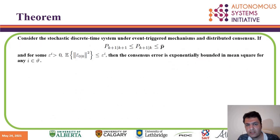We analyzed the stochastic proposed consensus control for the multi-agent system. We showed that by tuning a proper event-trigger scheduler, we can provide satisfactory consensus performance while reducing the communication rate.